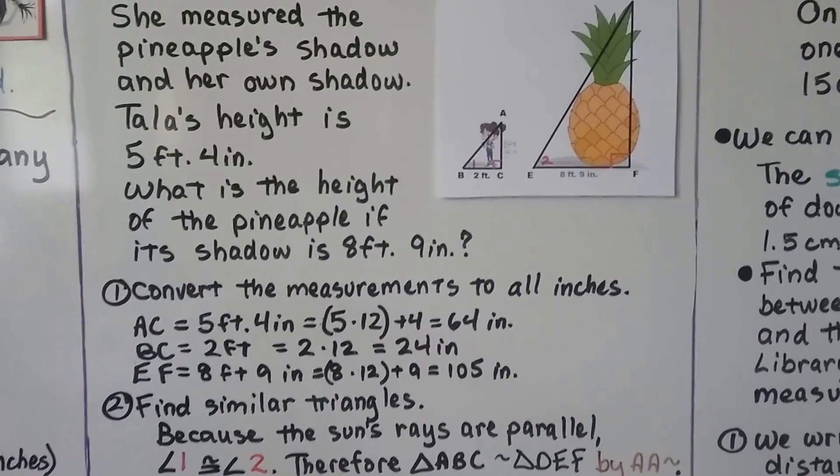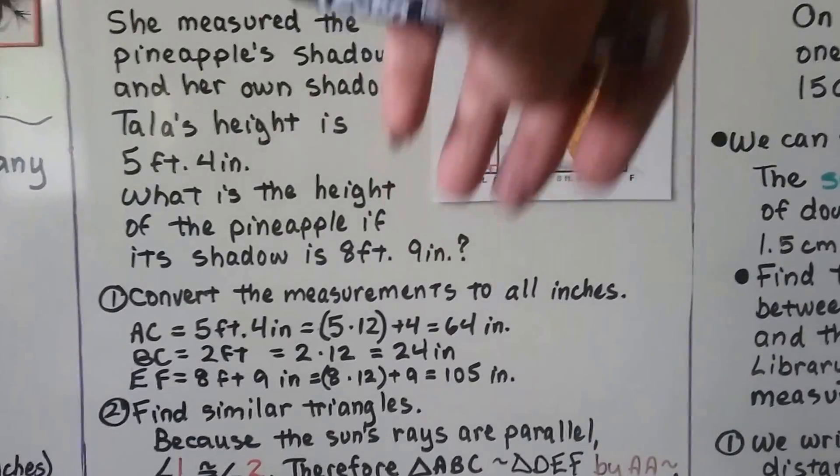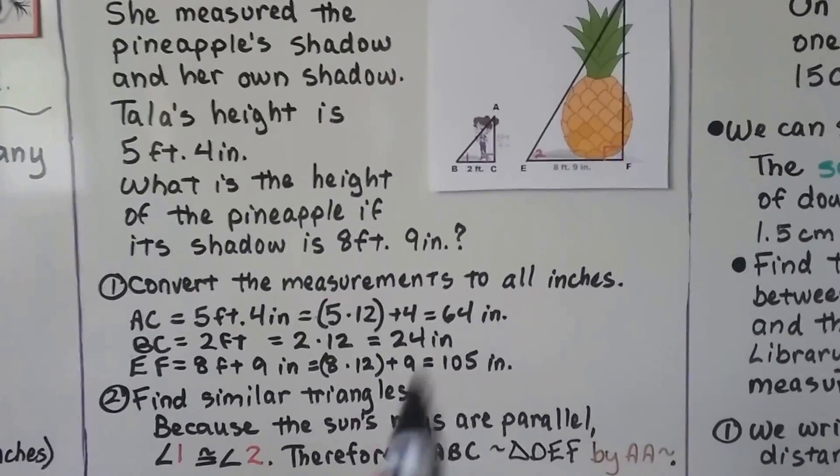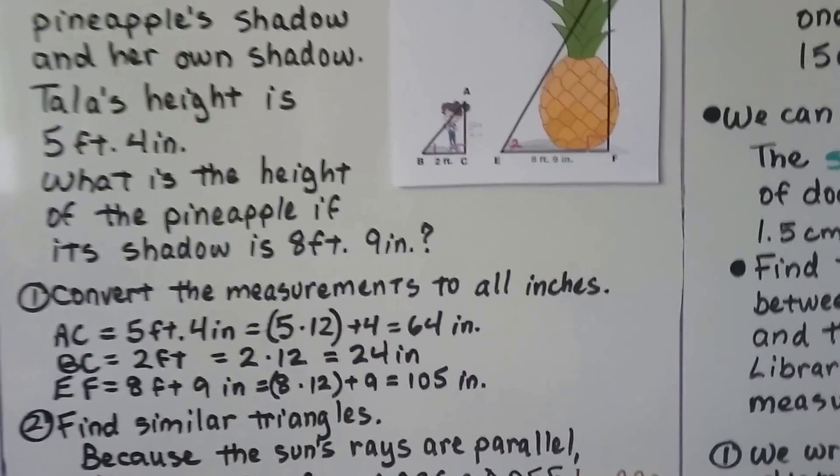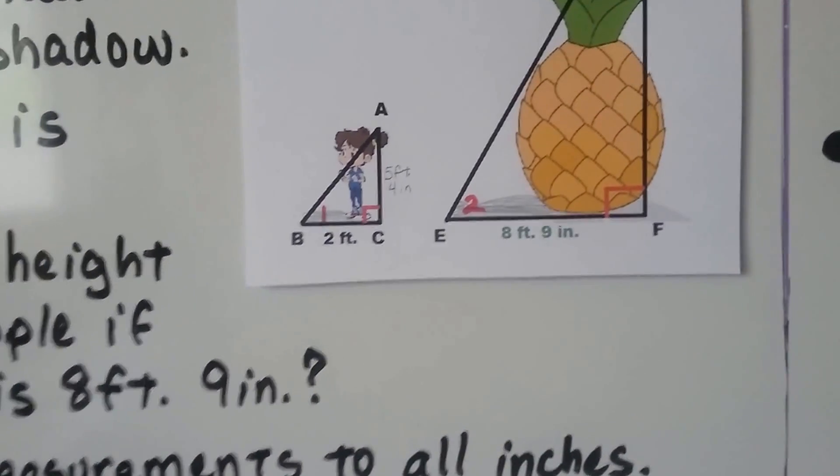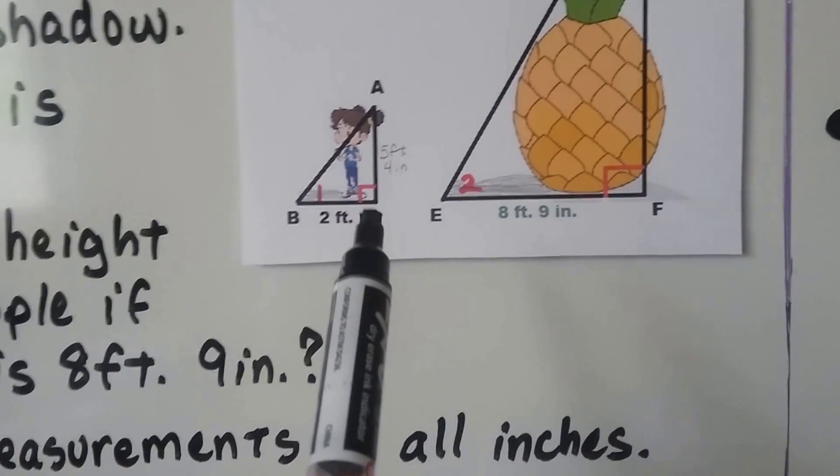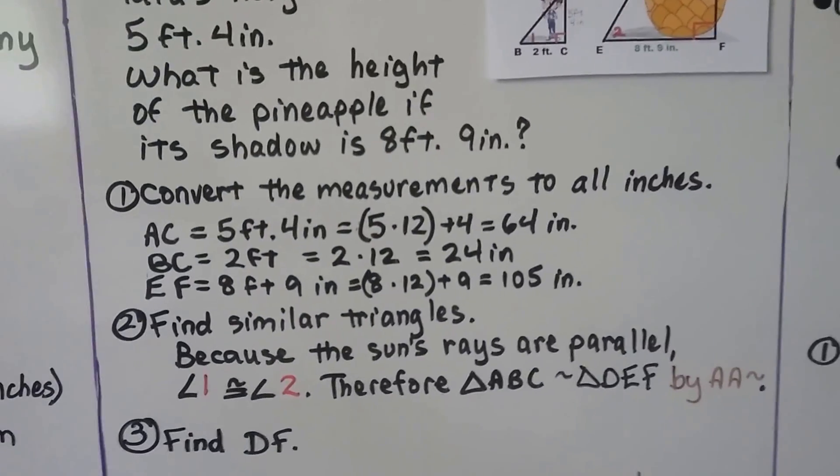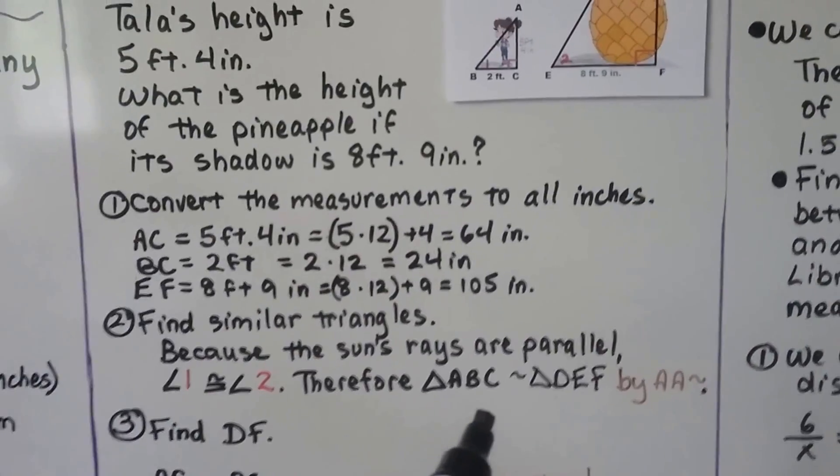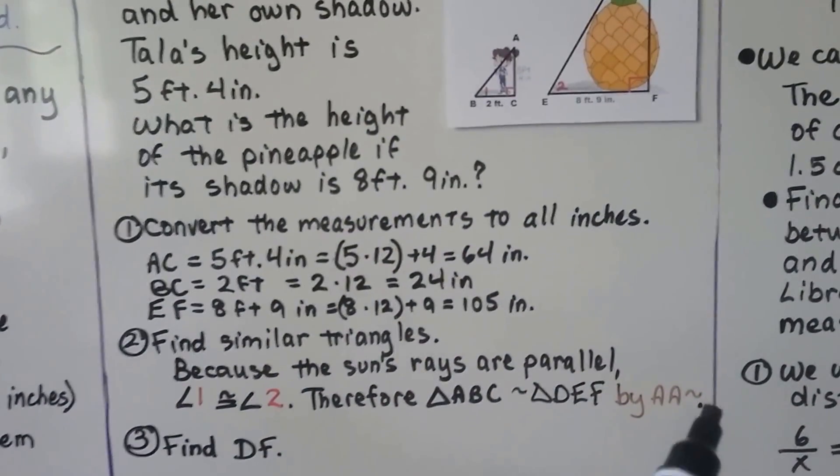Now we find similar triangles. Because the Sun's rays are parallel coming down, angle 1 here is congruent to angle 2 here. This angle is congruent to this angle and we have a right angle here and we have a right angle here. Therefore, triangle ABC is similar to triangle DEF by AA similarity.